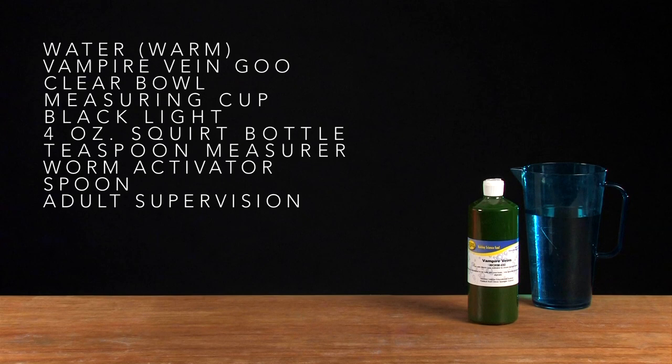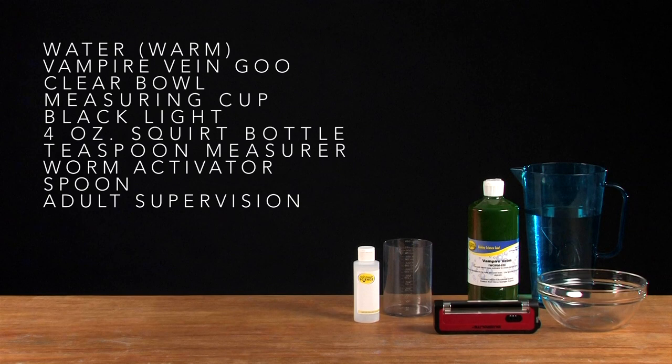Water, vampire vein goo, a clear container or bowl, measuring cup, black light, empty four ounce bottle, teaspoon measure, worm activator, and a spoon.